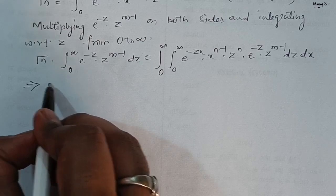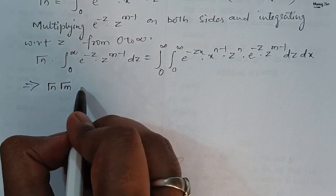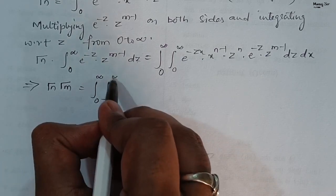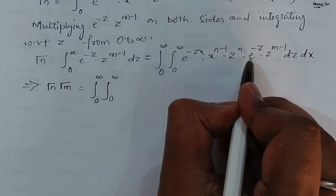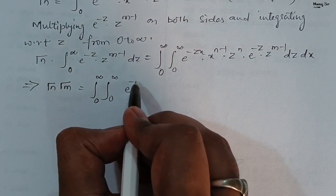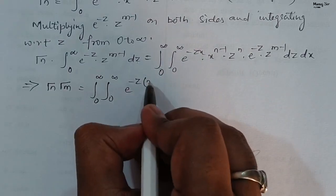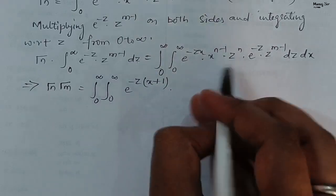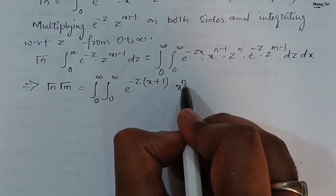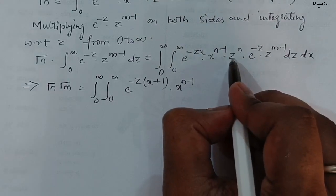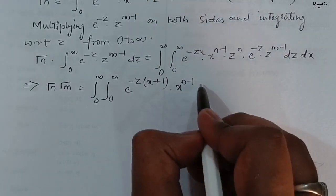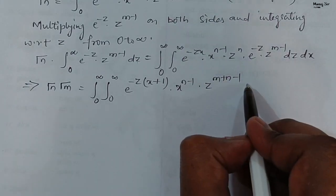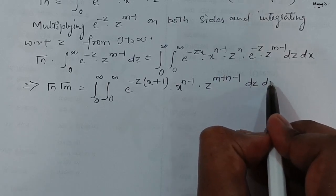So we can rewrite this as gamma n into gamma m equals to the double integral from 0 to infinity, 0 to infinity. We have e to the power minus z times x plus 1, into x to the power n minus 1, into z power m plus n minus 1, with order of integration dz dx.